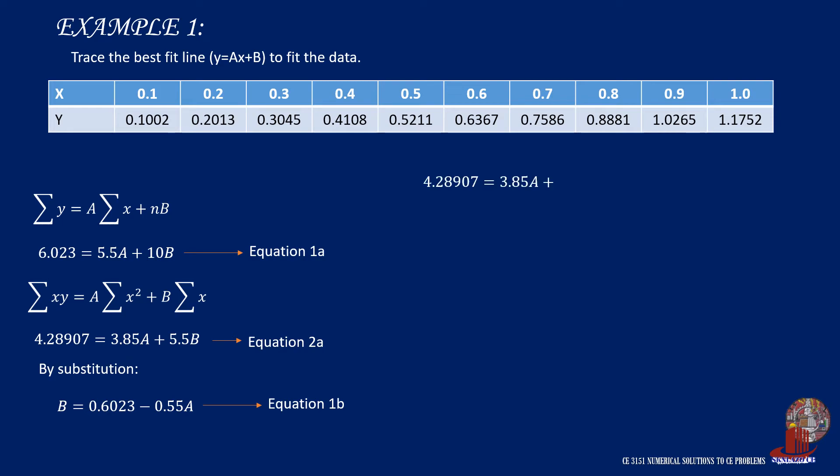Then plug equation 1b into equation 2a, making it 4.28907 equals 3.85a plus 5.5 times (0.6023 minus 0.55a).